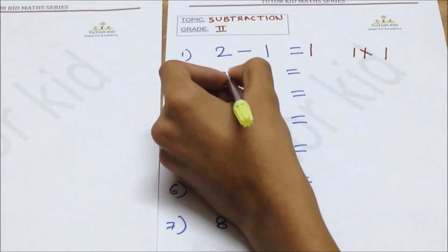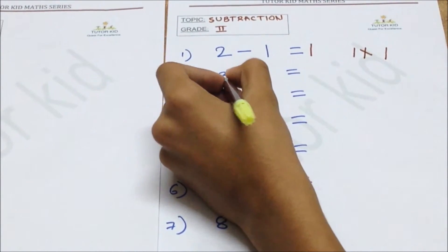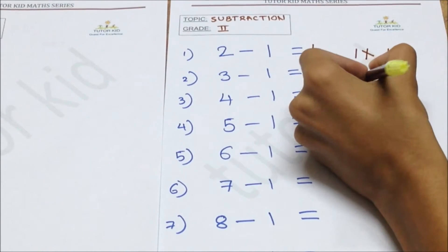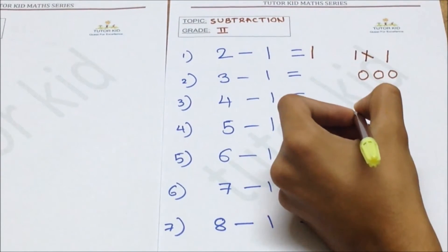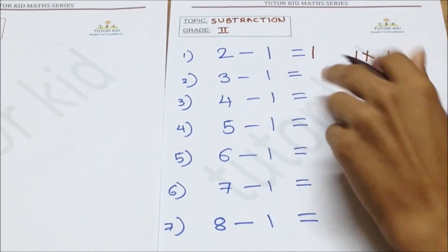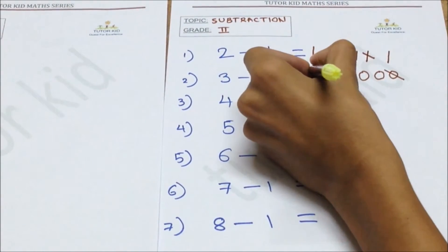Second question. We have three balls. You gave one ball to your brother. We have two remaining. That is, answer is two.